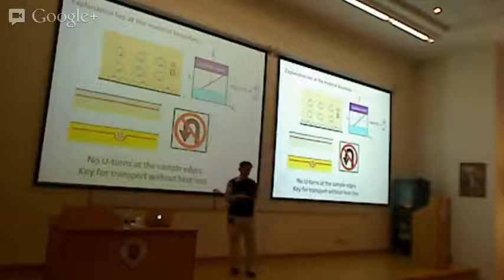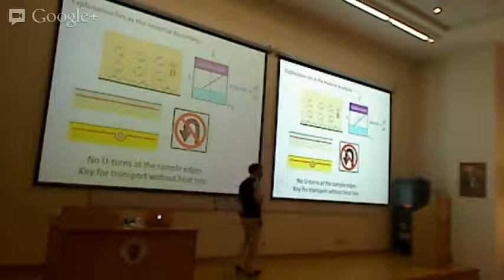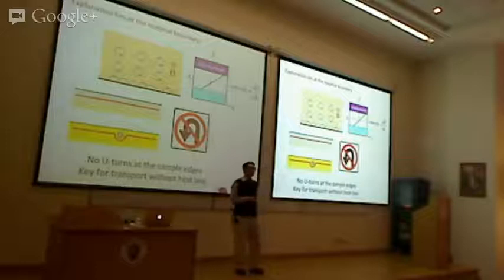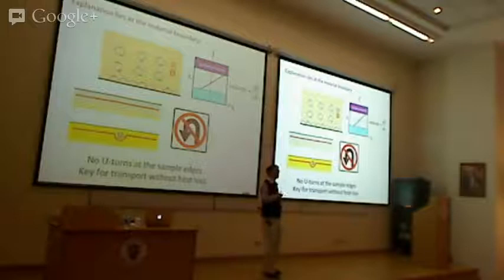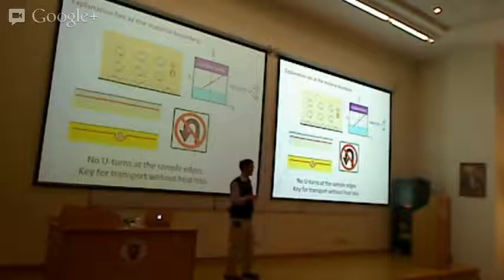This is cool, but there's a problem: it happens only at very low temperatures, near absolute zero, and also at very high magnetic fields. So in terms of practical applications, it's very limited. Theorists have been wondering whether we can realize a state like this at zero magnetic field and at room temperature. That's what led to the discovery of topological insulators.